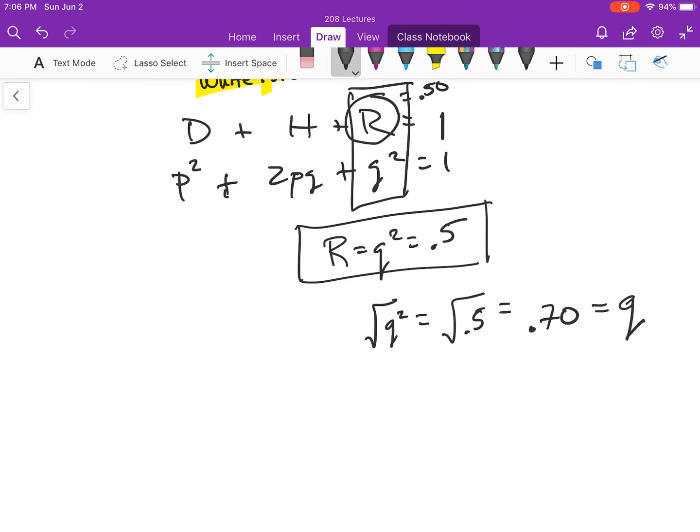Now once I know Q, I know that P must equal 0.3 because they sum to 1. And now I can easily go P squared plus 2PQ plus Q squared. And I can say 0.3 squared is this number. 2 times 0.3 times 0.7 plus Q squared is going to be 0.7 squared.